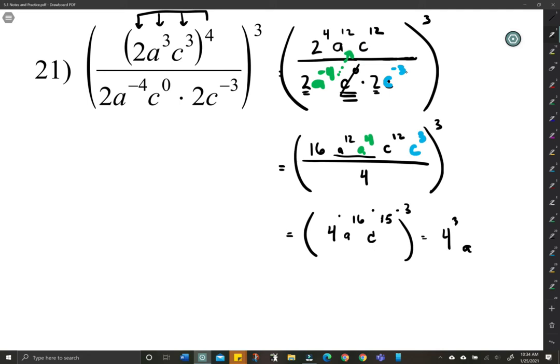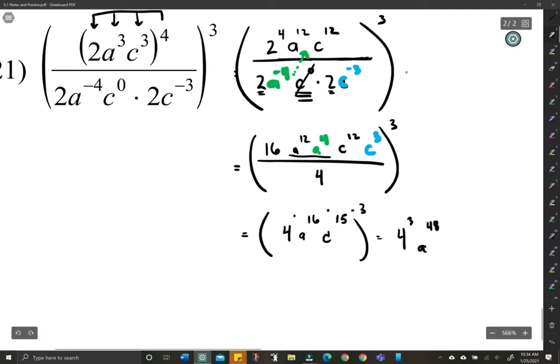And c, 15 times 3, oh my, is 45. And 4 to the 3rd is 64. Oh, man.